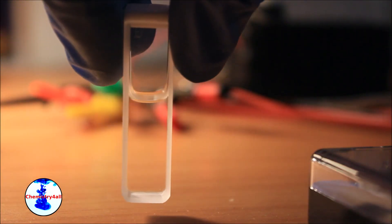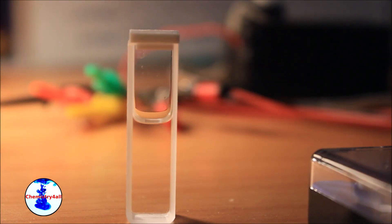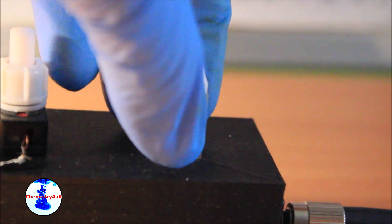Now we will measure the UV-visible absorption spectrum of this solution. First the spectrum of the pure solvent ethyl acetate is taken.